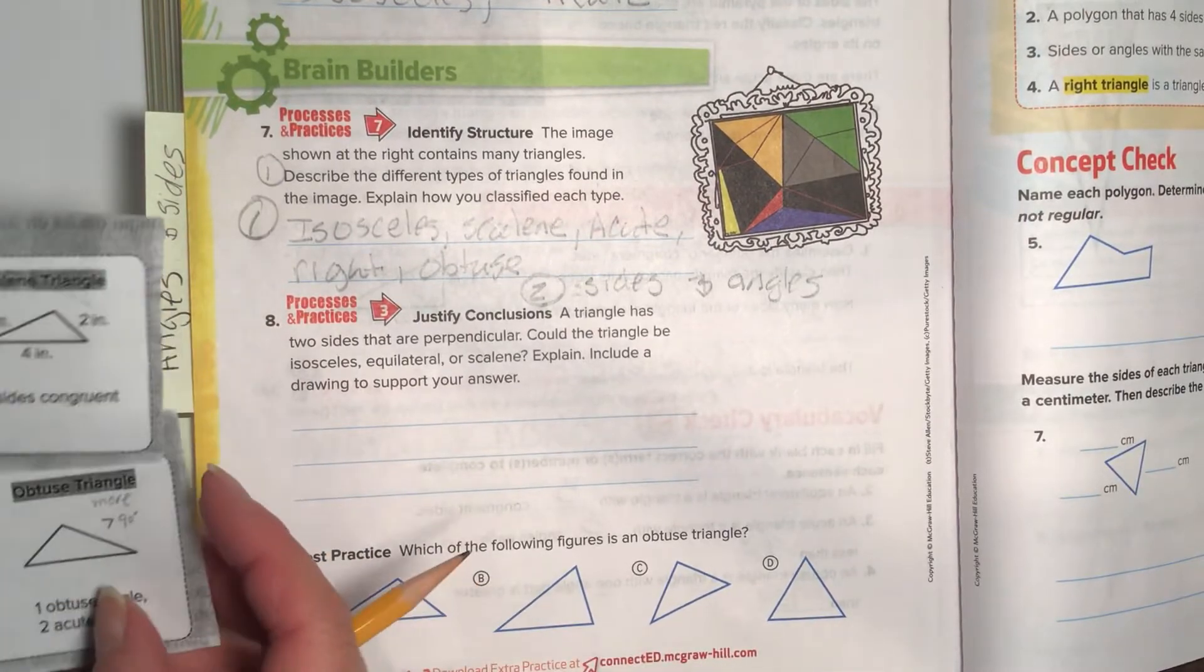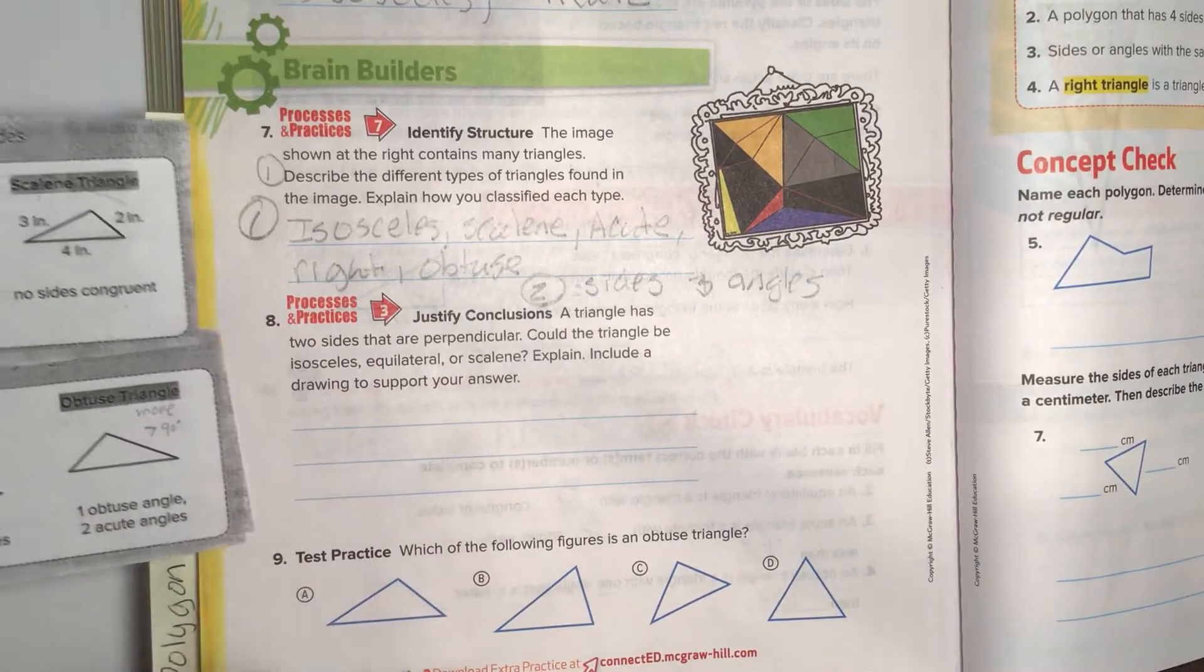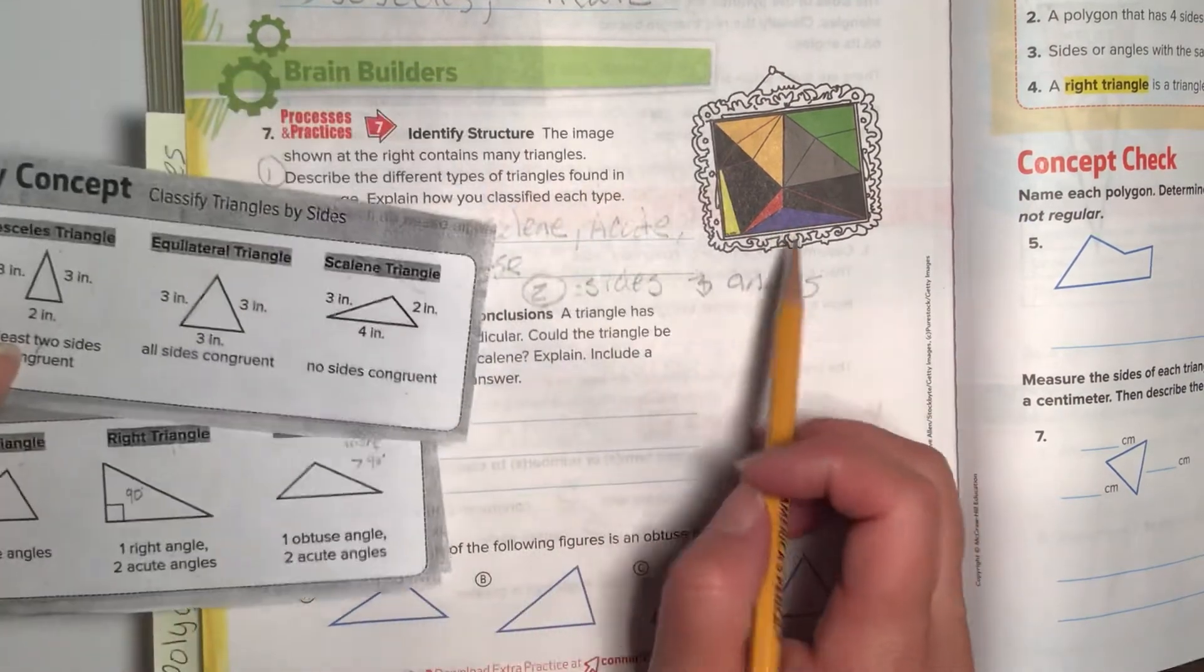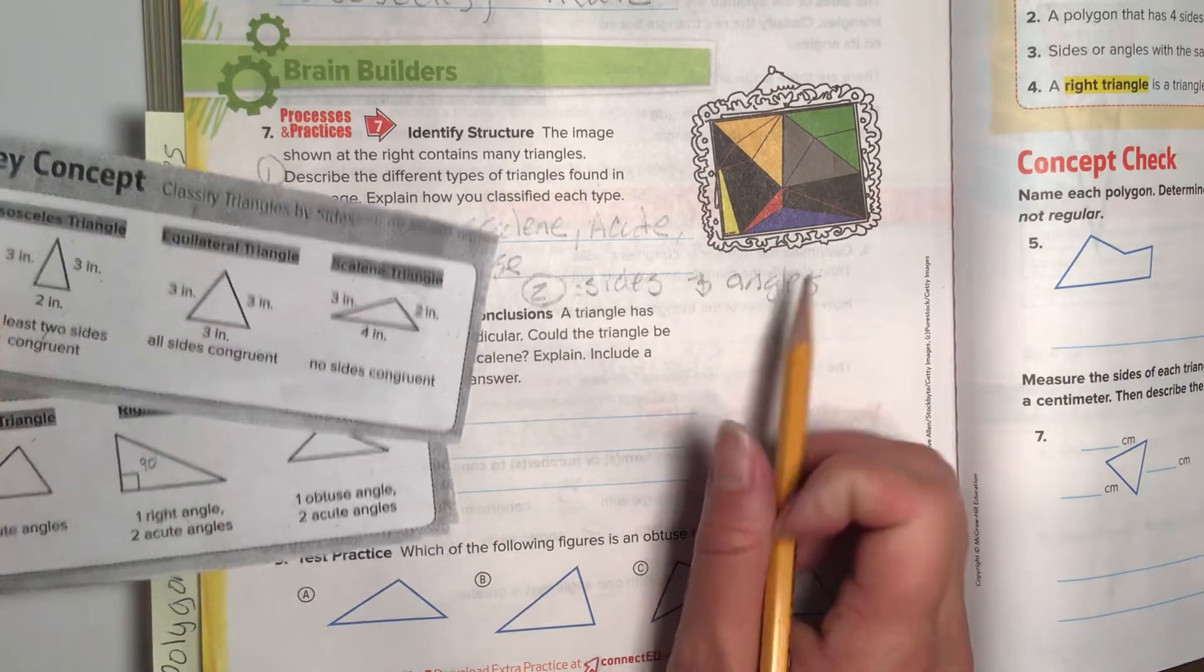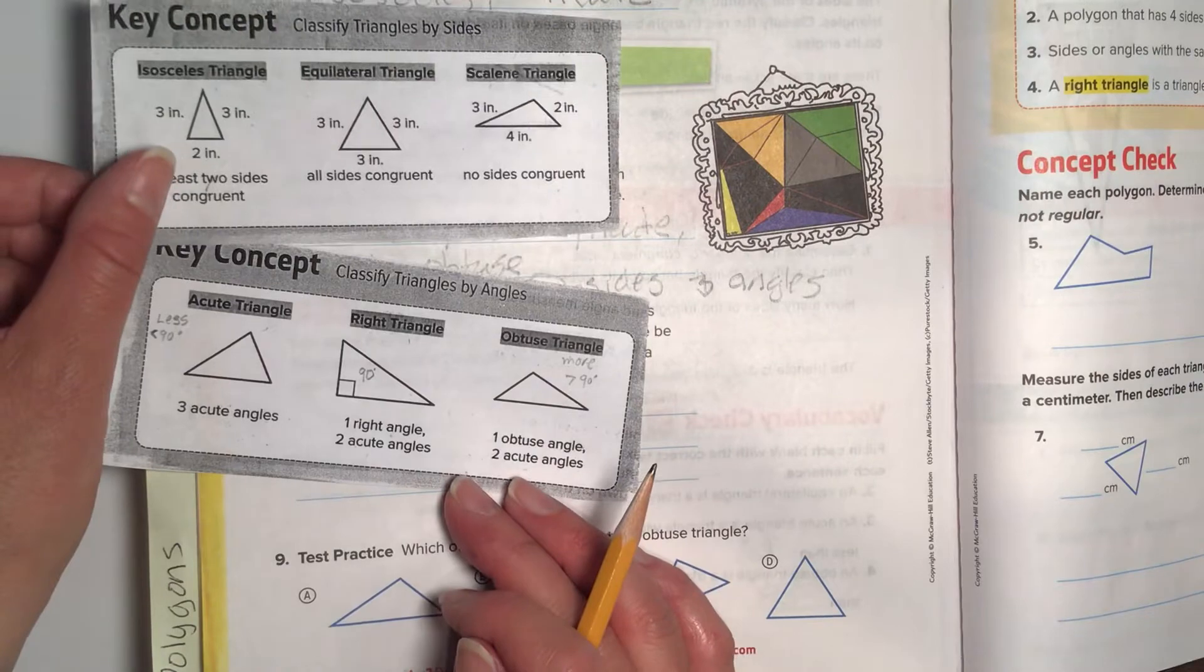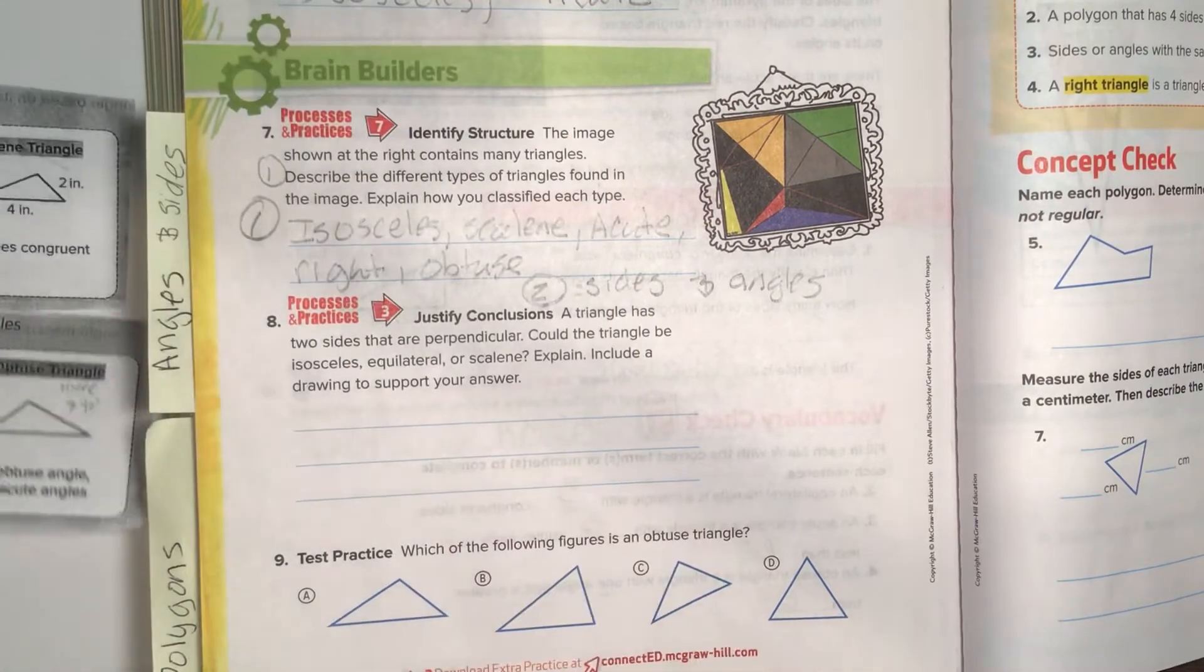So the only one I really don't see in that one is the equilateral. Do you guys see one that's even on all sides? I think that's our only one we don't have. We have all of them, but the equilateral one. Okay. Good job on the brain builder one.